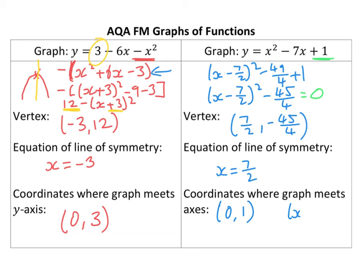And so, I get x minus 7 over 2, all squared equals 45 over 4. I'm then going to get x minus 7 over 2 equals the plus or minus the square root of 45 over 4. Okay, and from that, I can now do my 2 points.